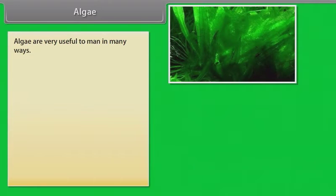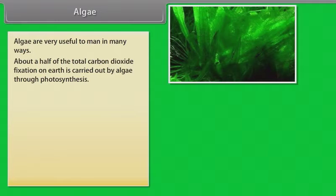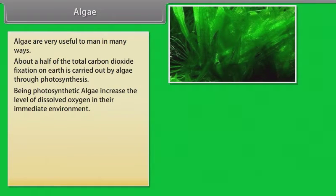Algae are very useful to man in many ways. About a half of the total carbon dioxide fixation on earth is carried out by algae through photosynthesis. Being photosynthetic, algae increase the level of dissolved oxygen in their immediate environment.